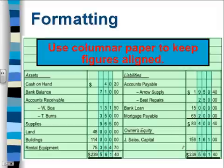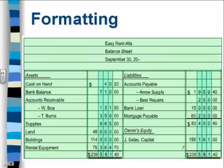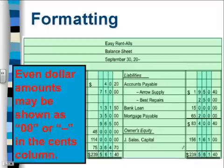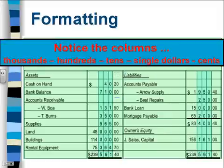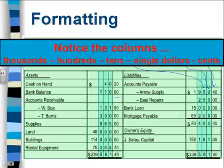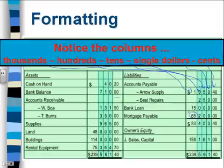The use of columnar paper keeps our numbers lined up and makes it easier to add. Even dollar amounts — meaning no cents — can be shown as two zeros or a single line through the cents column. Decimals and commas are not used on this paper; we just place numbers in the particular columns. Starting from the far right: cents go in the rightmost column, then single dollars, then tens, hundreds, and anything larger — thousands, ten thousands, hundred thousands — all go in the wider column to the left. For example, 65,000 and 114,000 all go in the appropriate columns.